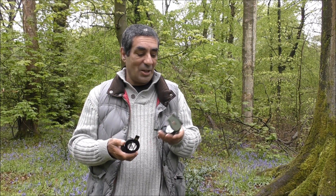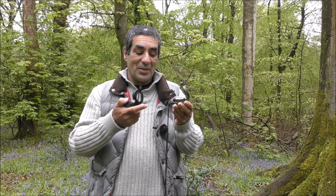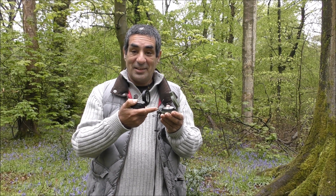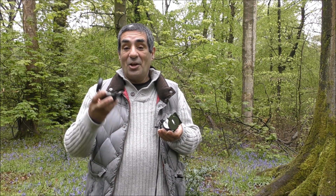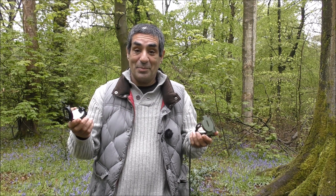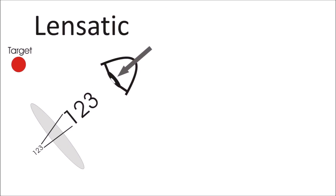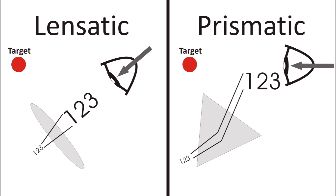You look at that number through a piece of glass, and this is where the difference is. On a lensatic compass the piece of glass you look through is a lens — hence the name — because the piece of glass is convex. On a prismatic compass the piece of glass is shaped like a prism. The lens on a lensatic compass will magnify the number so you can read it, and the prism on a prismatic compass not only magnifies the number but also changes the direction in which that number is displayed.